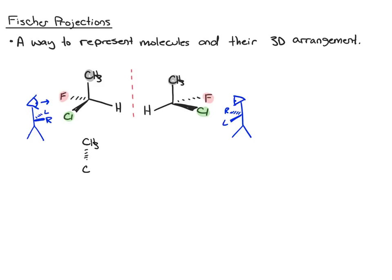So now what you want to do is draw this molecule from this perspective. From this perspective, pointed up is the methyl, pointed down away from you is the hydrogen. So these groups, if you're looking in this direction, are pointed back away from you, the viewer. So let's put those on dashes. And then the fluorine and the chlorine are pointed toward you, the viewer, so we're going to put those on wedges. On the left side is the fluorine, and on the right side is the chlorine.